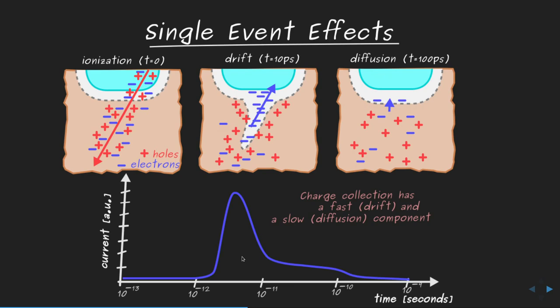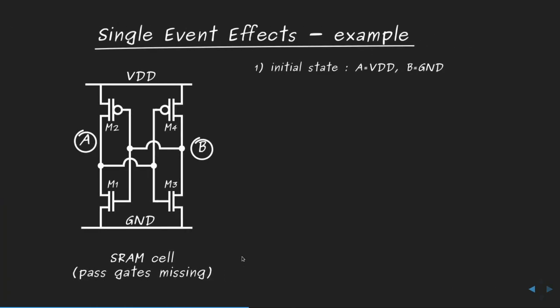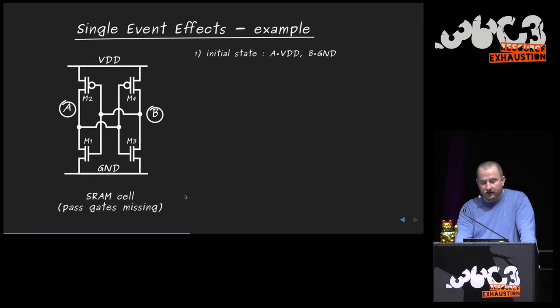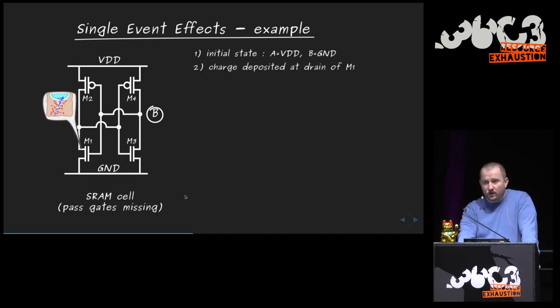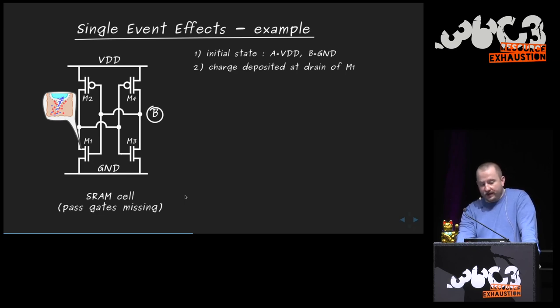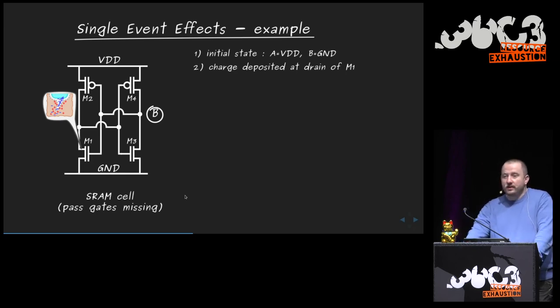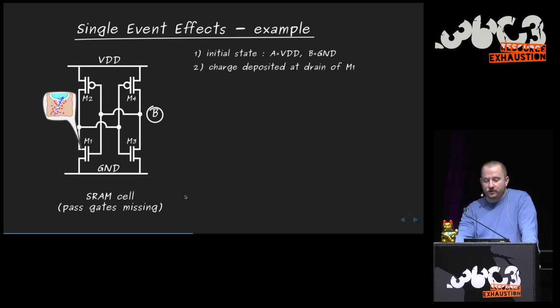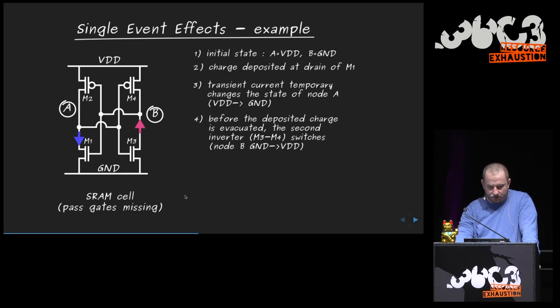Consider a typical memory cell composed of two back-to-back inverters. Assume node A is at high potential and node B is at low potential. A particle hits the drain of transistor M1, creating a short-circuit current to ground and bringing the drain of M1 to low potential. This acts on the gate of the second inverter, temporarily changing its state from low to high, which reinforces the wrong state in the first inverter — the error is then locked into the memory cell and information is lost.